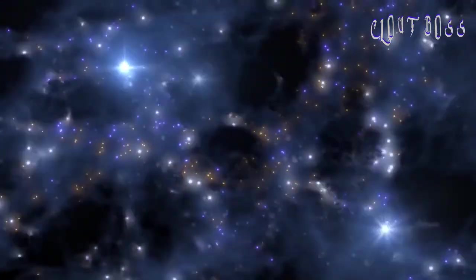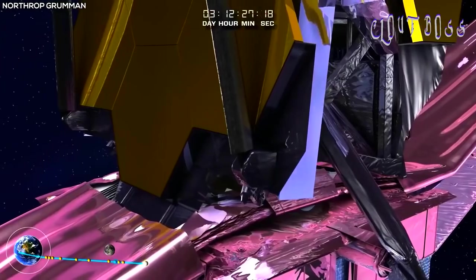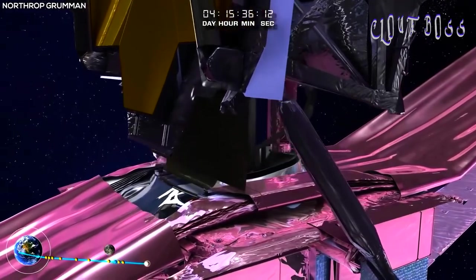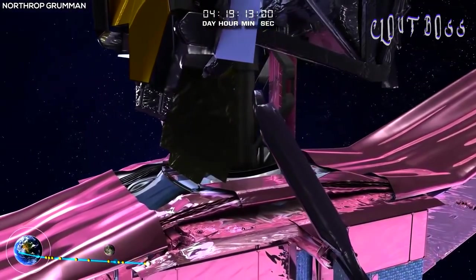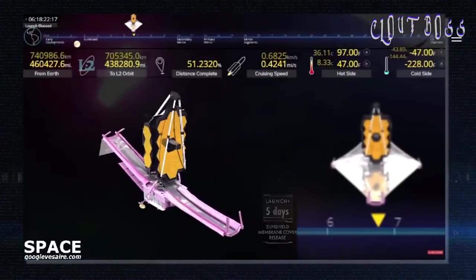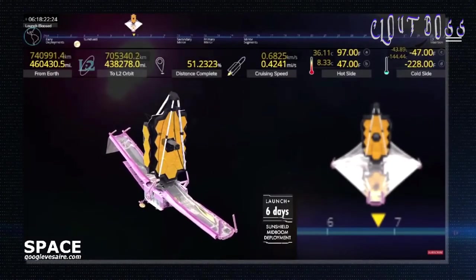This amazing telescope has not only spread its wings, but it has now opened its eyes, Lee Feinberg, the Webb Optical Telescope Element Manager at NASA's Goddard Space Flight Center in Maryland, said during a news conference. Webb's location will give it a wide view of the cosmos, and will keep the telescope's optics and scientific instruments cold enough to function and perform optimal science.